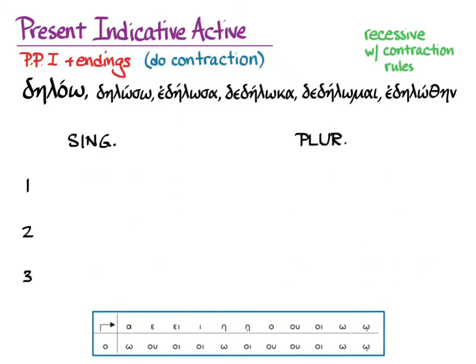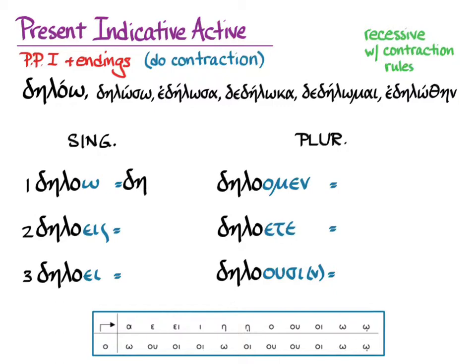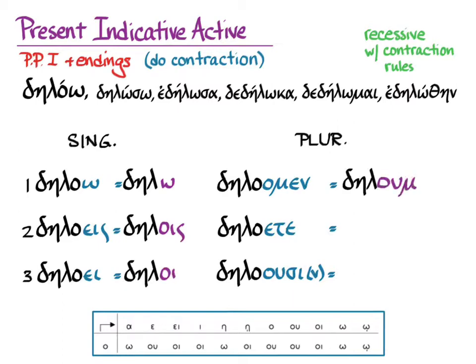Let's see what this looks like with an actual verb. We put in the first principal part stem from delao, then the endings that we know, and now we do the contraction. The result looks like this: dēlō, dēlois, dēloi, dēloumen, dēloute, dēlousi.